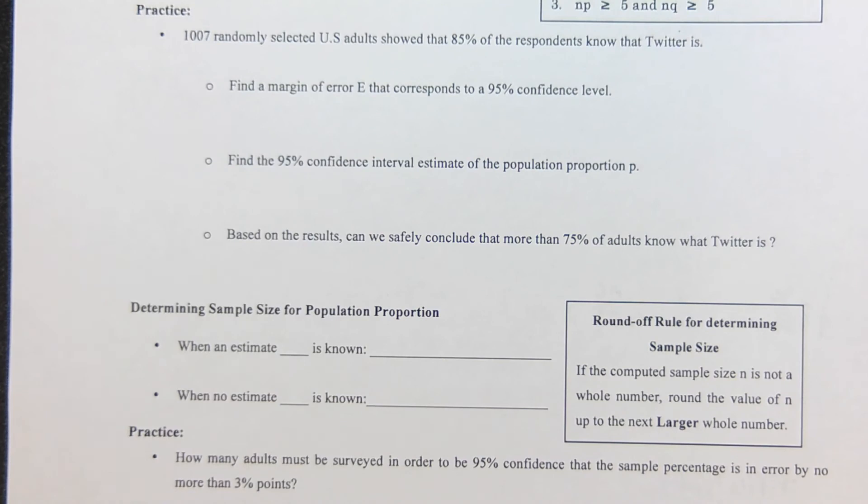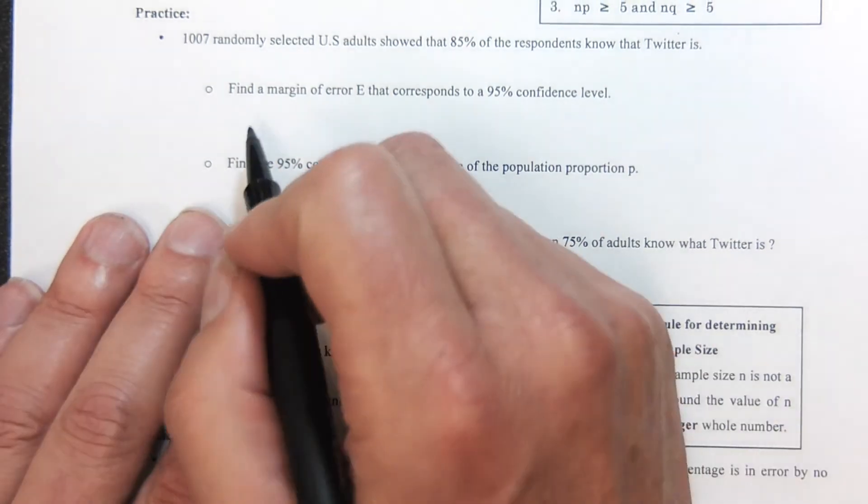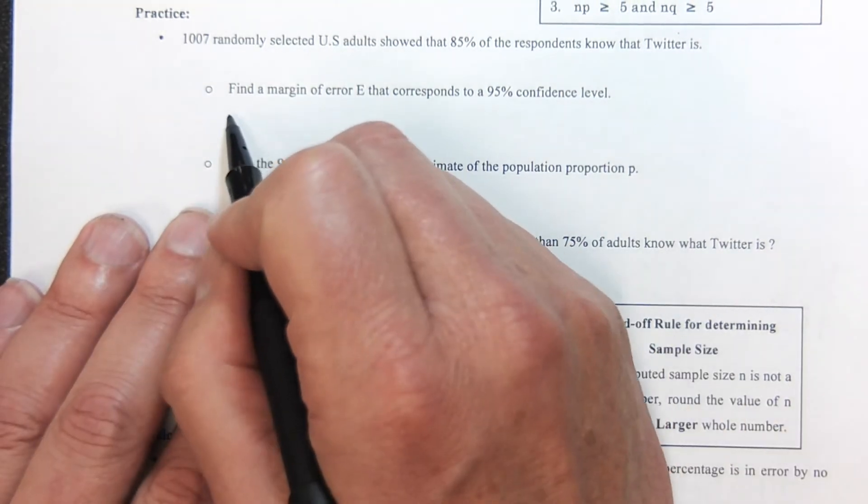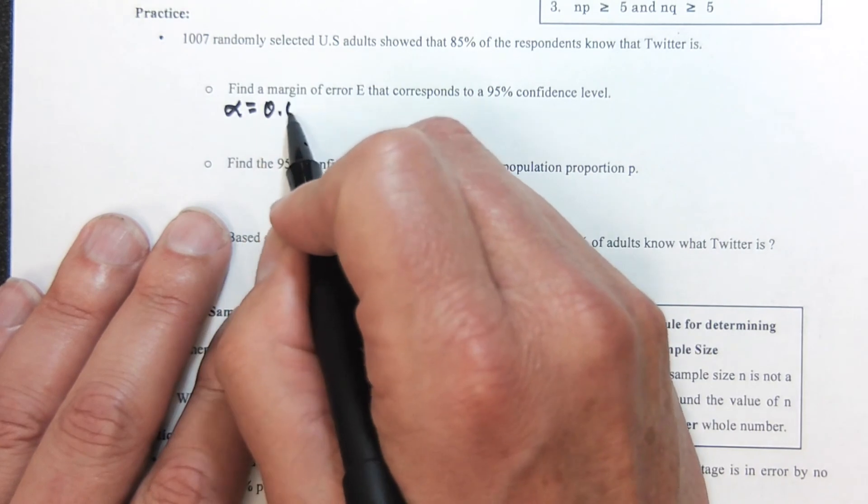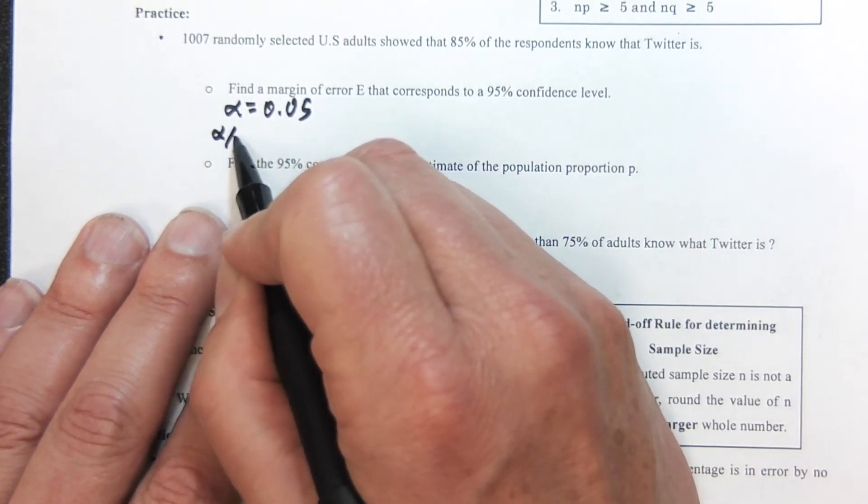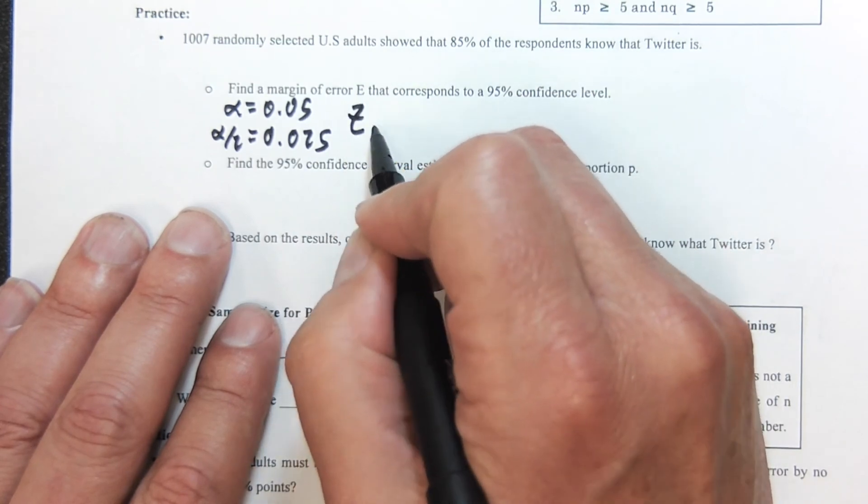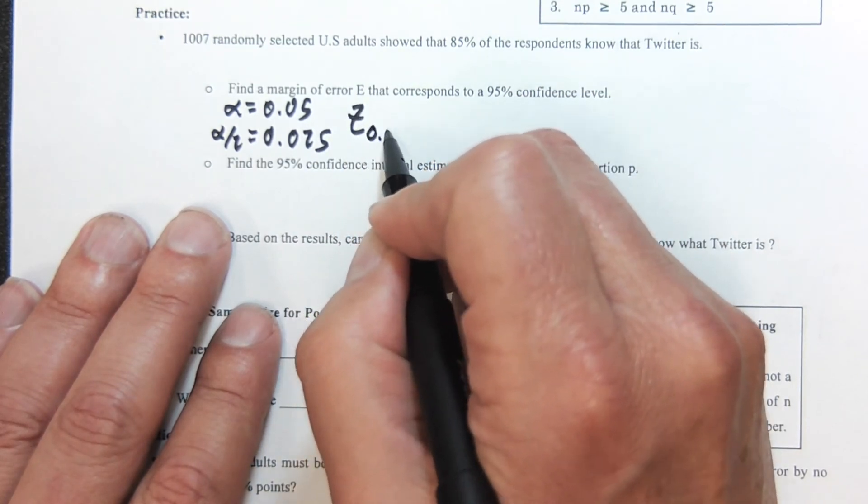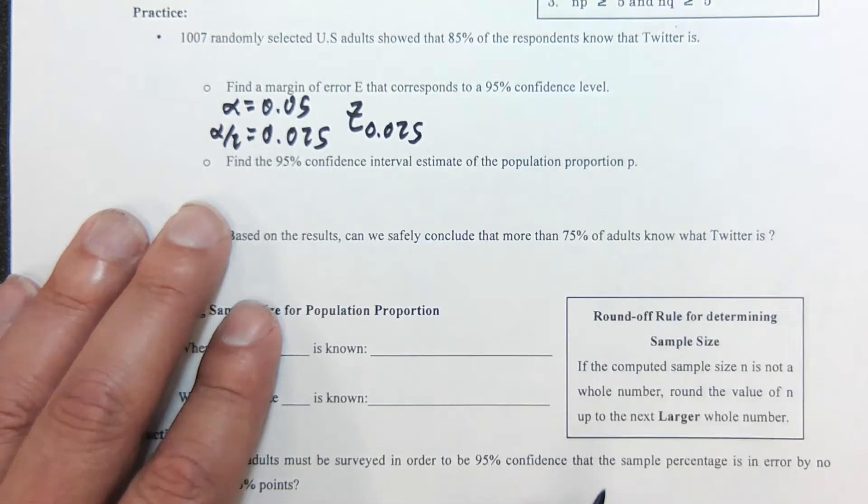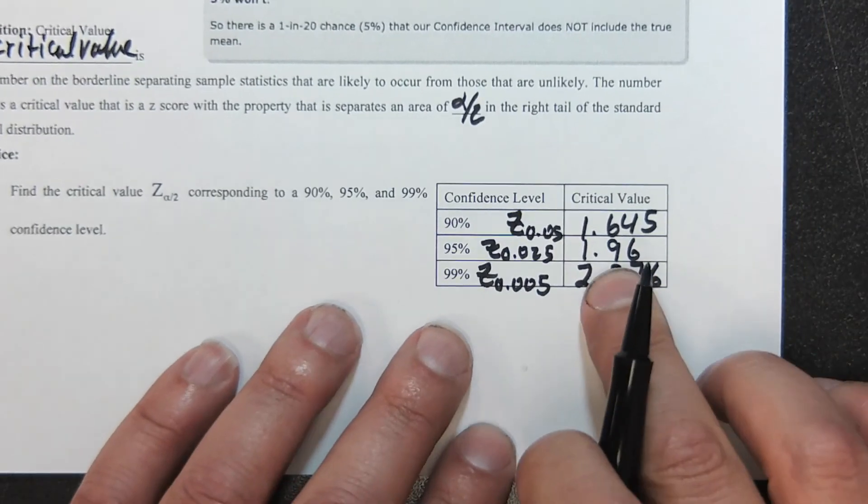Now we're to the Twitter problem again. 1007 randomly selected U.S. adults showed that 85% of the respondents know what Twitter is. We're going to find the margin of error E that corresponds to a 0.95 confidence interval. First of all, this means alpha is 0.05, so alpha over 2 is 0.025. We know Z sub alpha is 0.025, which we calculated as 1.96.